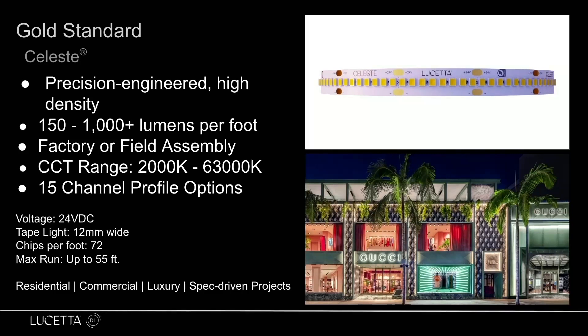You have 15 channel profile options as well. That is all on the website. Everything from spec grade channels to 45-degree channels to mudding channels—all different styles of channels to be able to house this Celeste tape light in, to really be able to change the shape and form of your light as well as how that light shines on different types of applications and products and surfaces. Just note though, this is a little bit of a larger tape light. Most tape light out there is 8 millimeters in width. This is 12 millimeters in width.